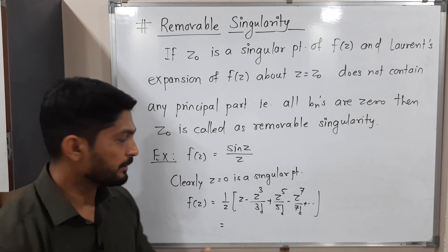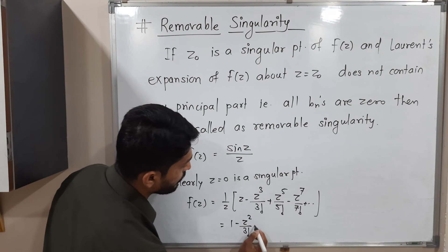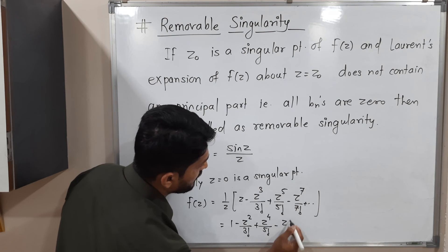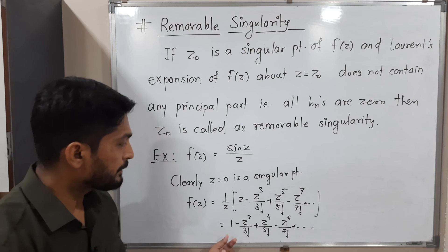If you multiply each term by 1/z, z will get cancelled from each term and you will have 1 - z^2/3! + z^4/5! - z^6/7! and so on. That means...